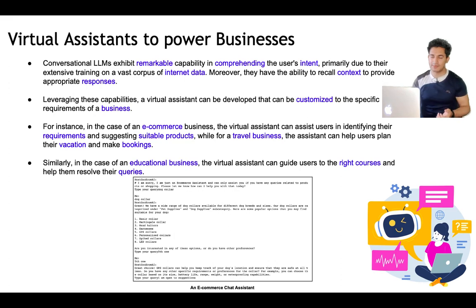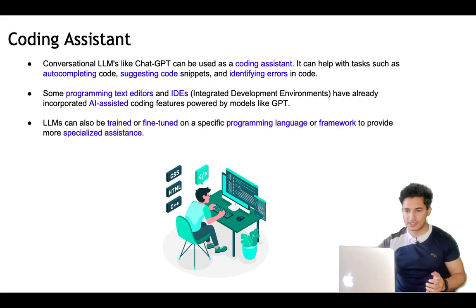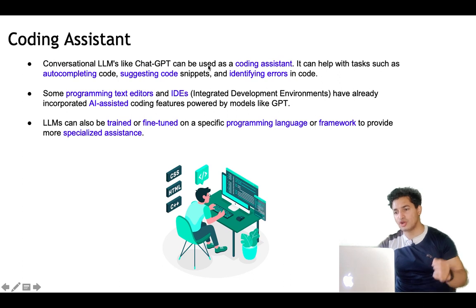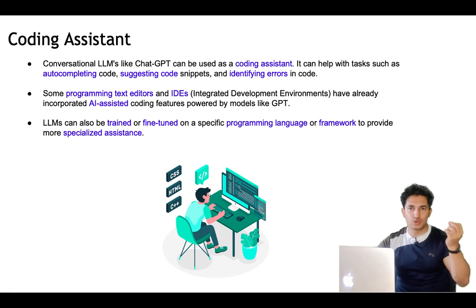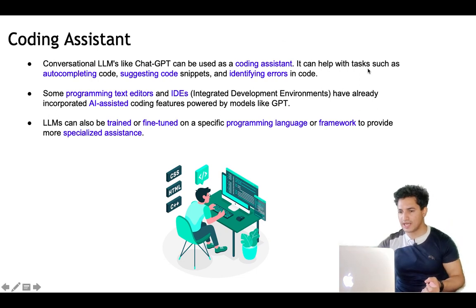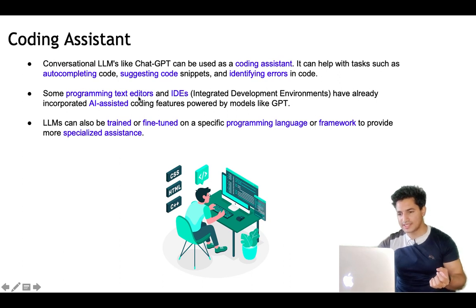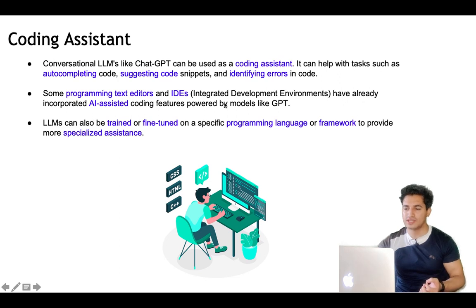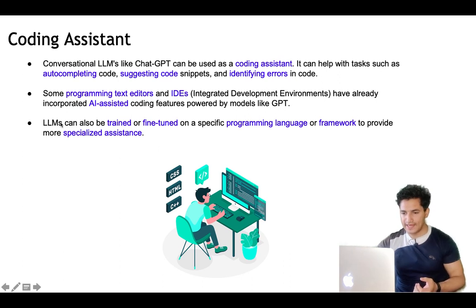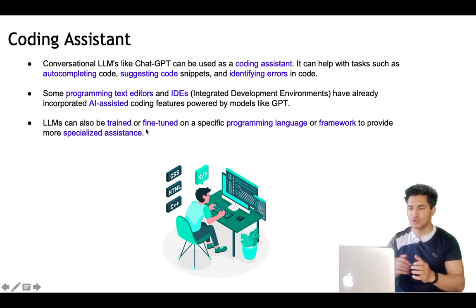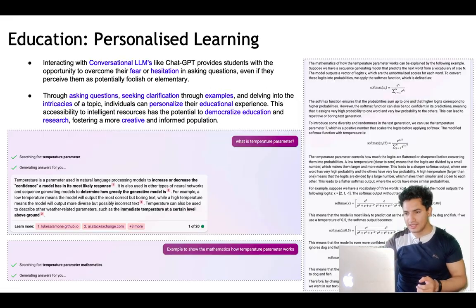Coding assistant: conversational LLMs like ChatGPT can also serve as coding assistants, with demonstrated understanding of coding languages. They can help with auto-completing code, suggesting code, identifying errors, and providing programming guidance. Many IDEs (Integrated Development Environments) and text editors have already incorporated AI-assisted coding features powered by models like GPT. LLMs can also be fine-tuned on a specific programming language or framework to provide more specialized assistance.